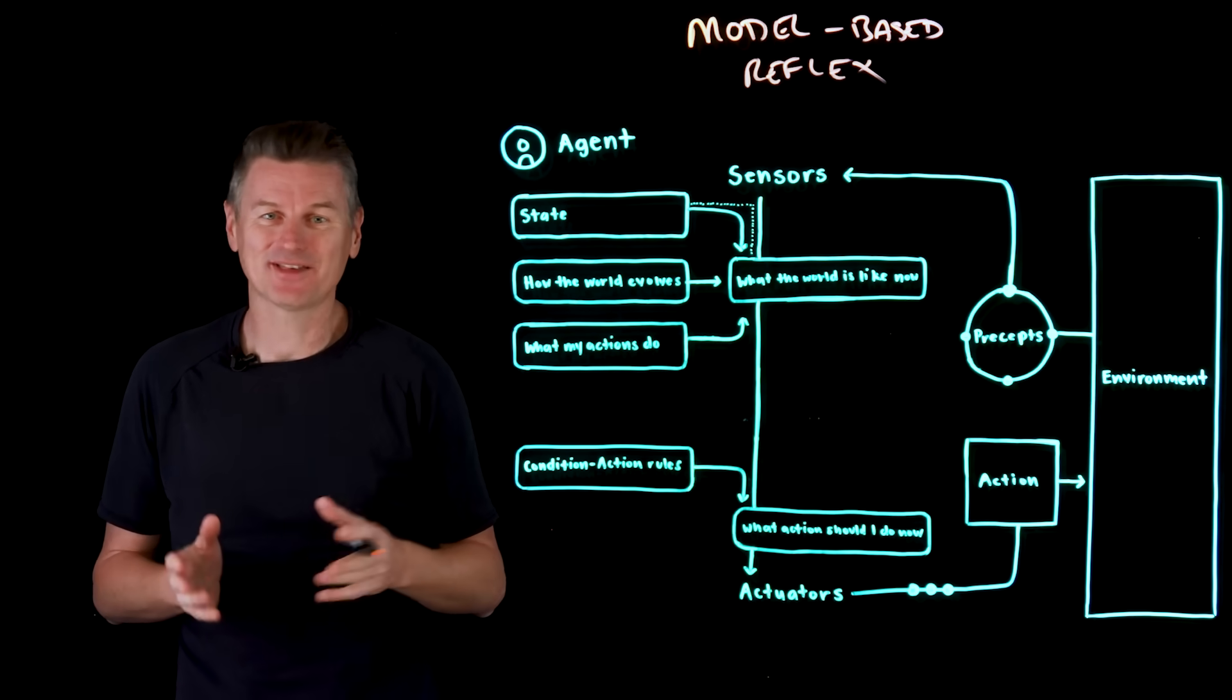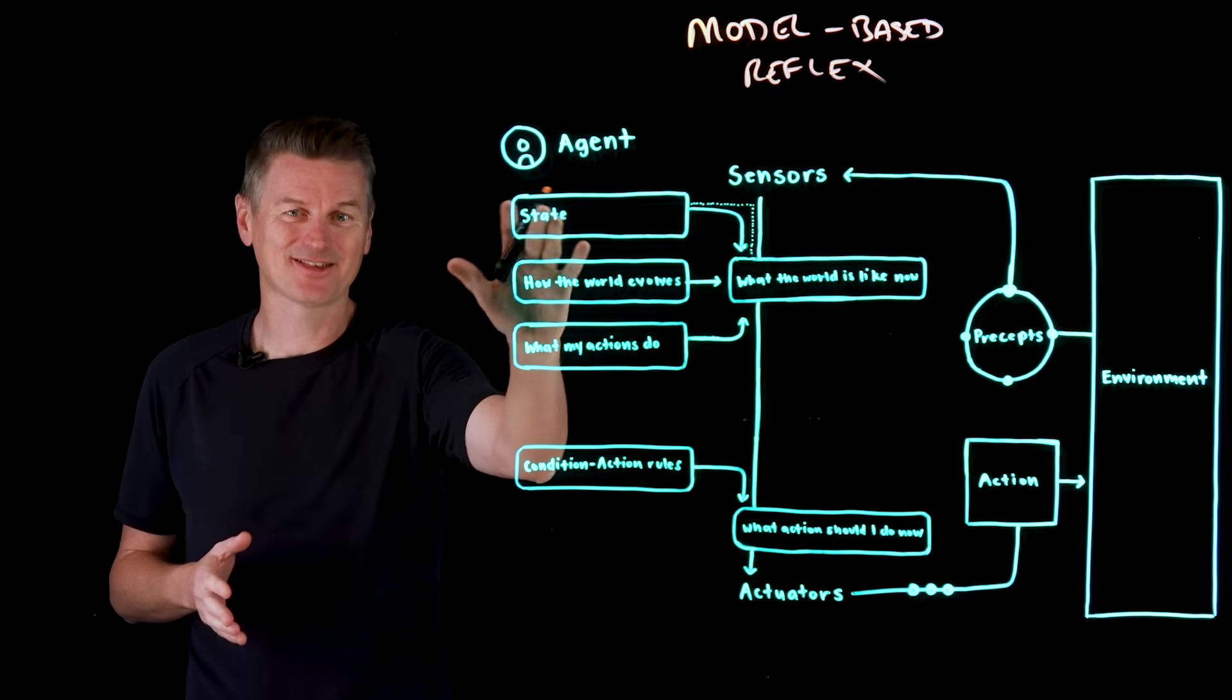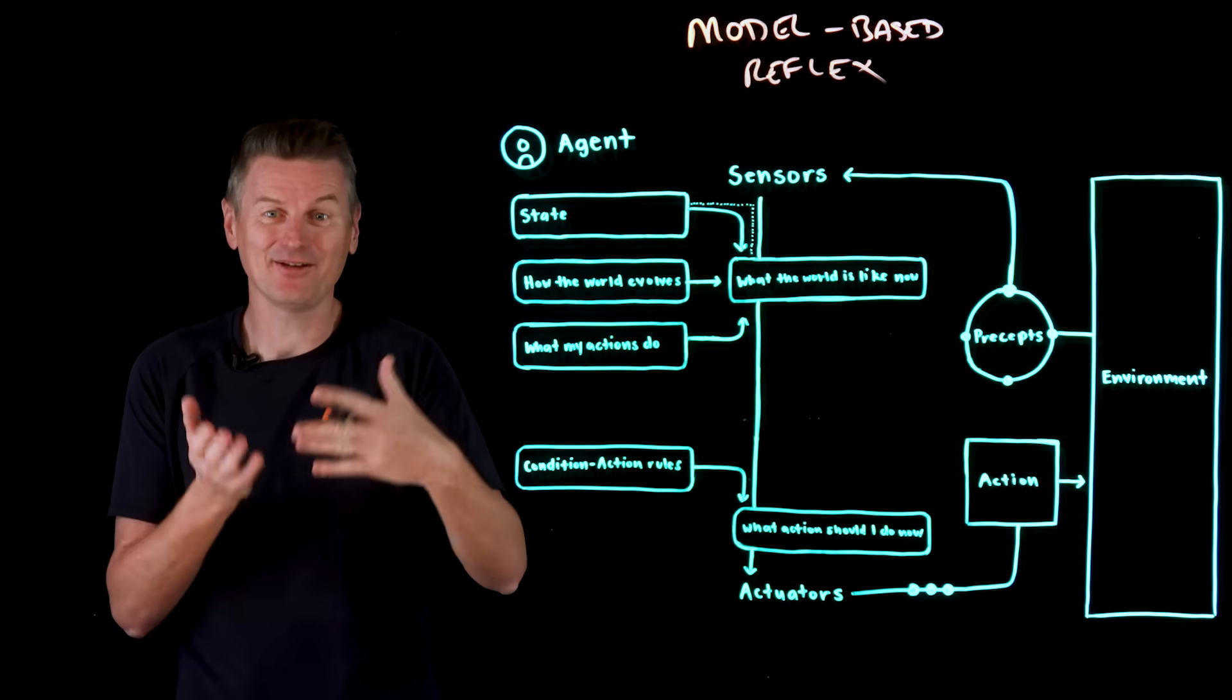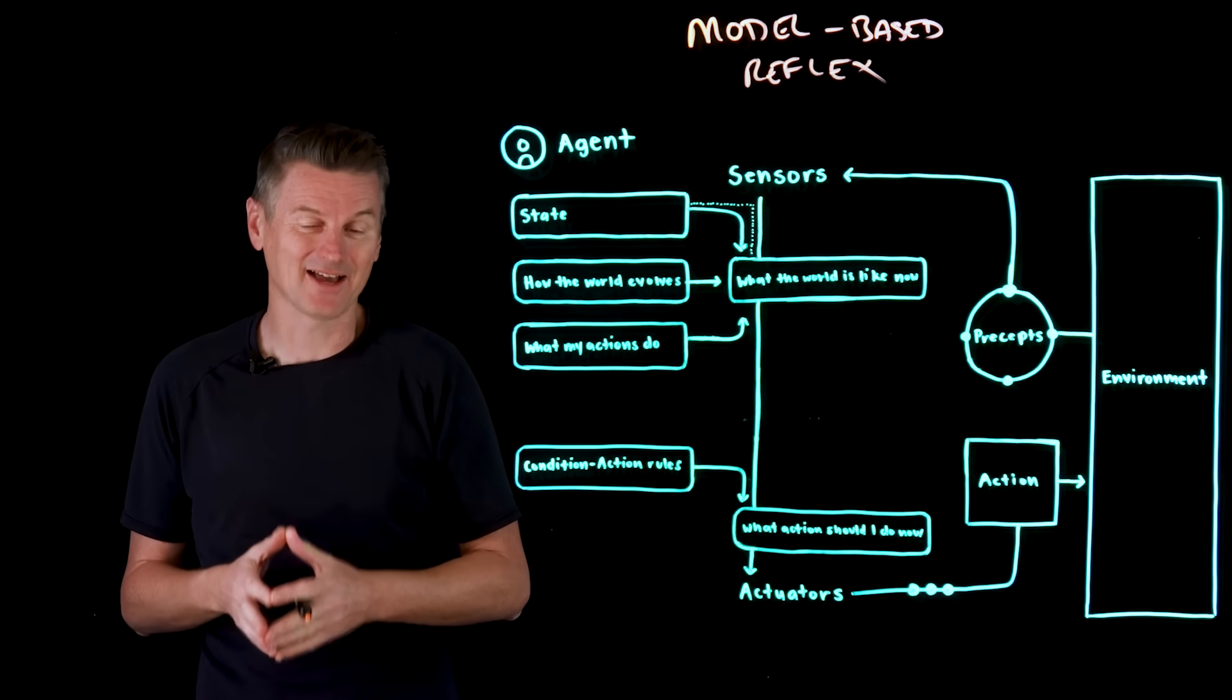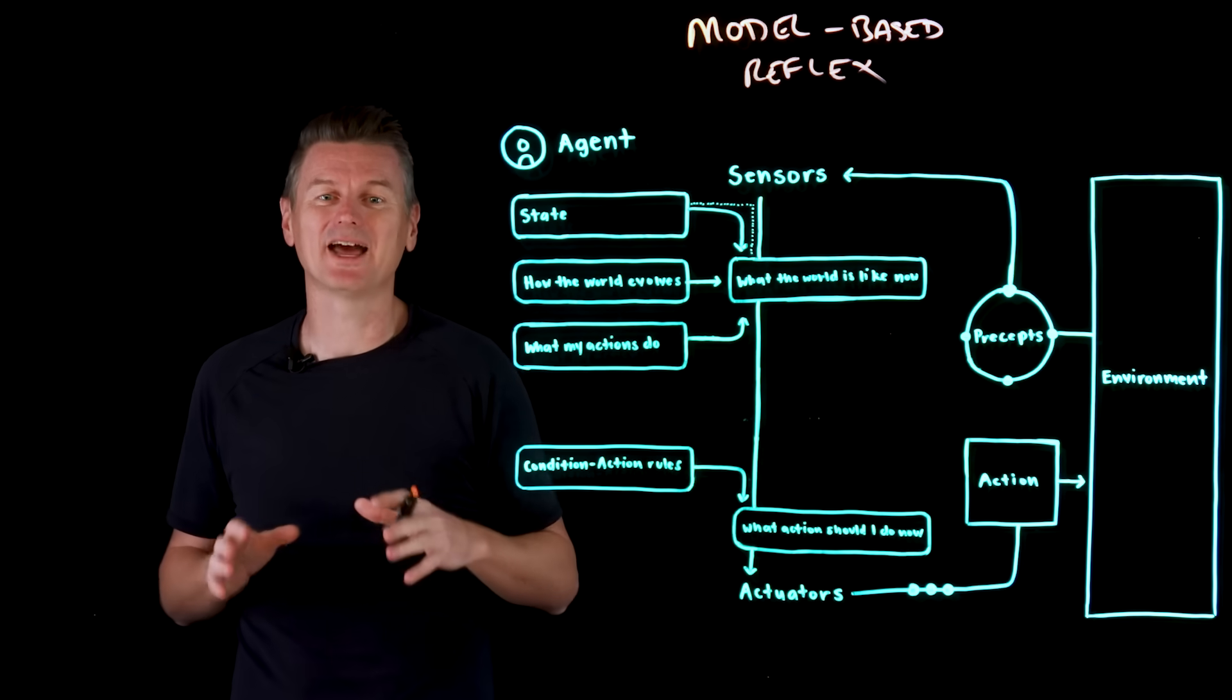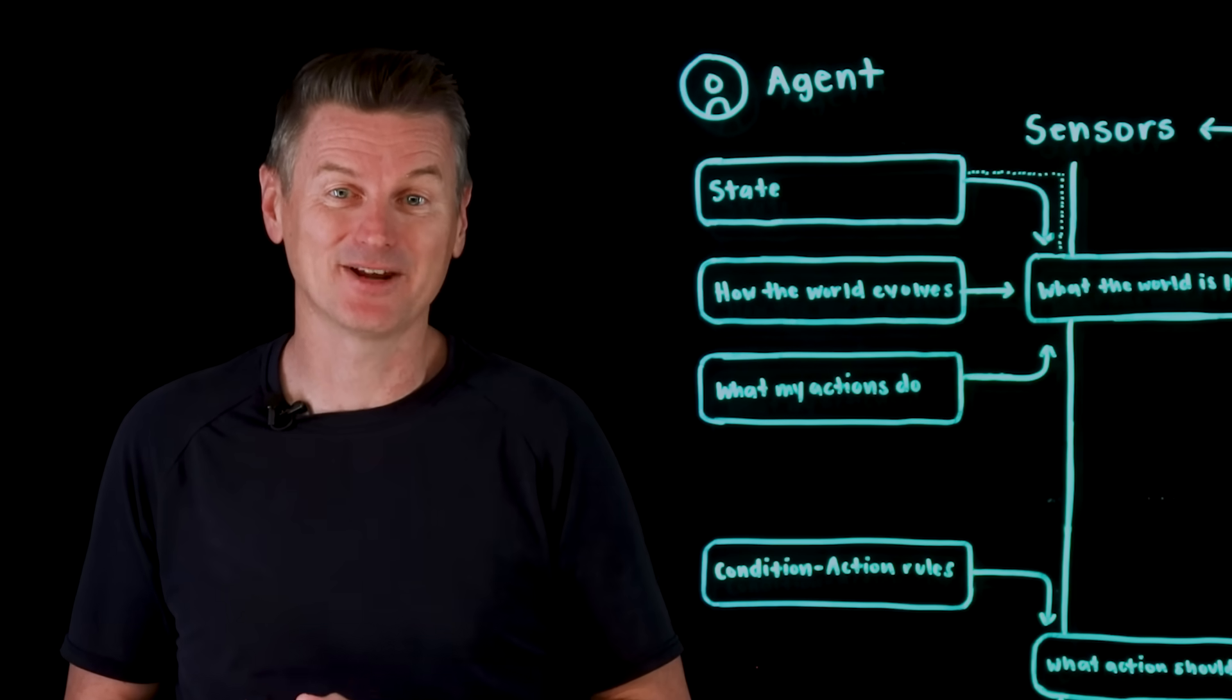And all of this is used instead of just taking the raw percepts data for decision making. So take a robotic vacuum cleaner, for example. The internal state remembers where it's been, what areas are clean, and where the obstacles are. It knows that if it moves forwards, it changes its location, and that action has consequences. And it has condition action rules, like if I think I'm in a dirty area and I haven't cleaned it yet, then vacuum it. It doesn't just react to what it immediately sees, it infers and it remembers parts of the environment it can't currently observe. That's model-based reasoning in action.